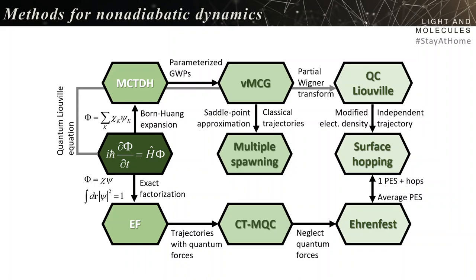This map is quite arbitrary — you can draw it in many different ways. I want to highlight this set of methods: multiple spawning, CTMQC, Ehrenfest, surface hopping, and QC-Liouville. All these methods have something in common: they have classical trajectories guiding the molecule and a quantum algorithm recovering the nonadiabatic information. These methods form a class called nonadiabatic mixed quantum-classical dynamics.